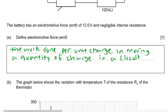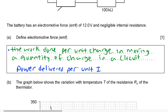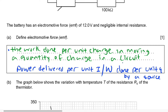You can also write this definition in another form. You can say electromotive force is the power delivered per unit current. Or you can also say it is the work done per unit charge by a source. All three of those answers are acceptable.